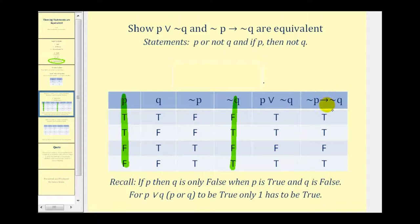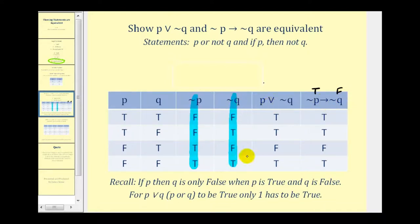Now we're going to the last column to determine where if ¬p then ¬q is true and false. For a conditional statement like this, it's only going to be false when the hypothesis is true and the conclusion is false. So we look at the column ¬p and find where it's true, then determine where ¬q is false at the same time. That's the only time this conditional will be false. When ¬p is true and ¬q is false, this conditional is false — everywhere else it's true.